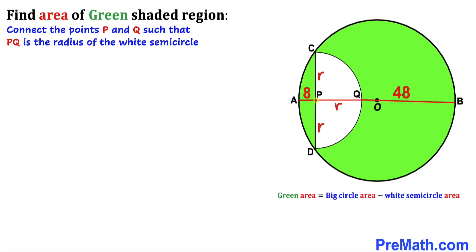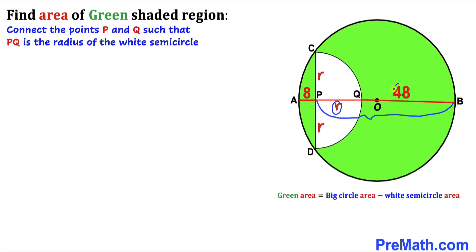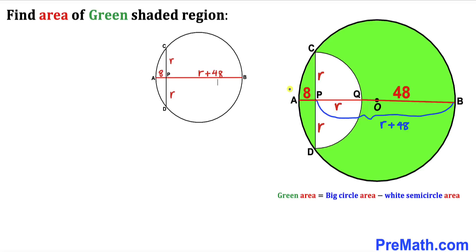We can see that distance PQ is r and distance QB is 48. So therefore the distance PB is going to be r plus 48, as you can see in this diagram.